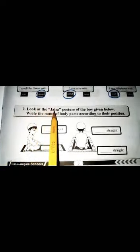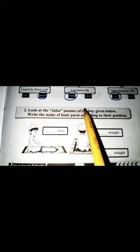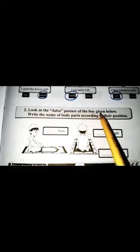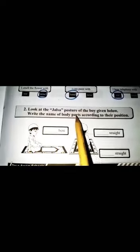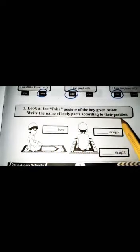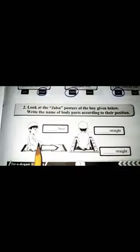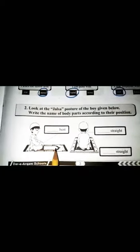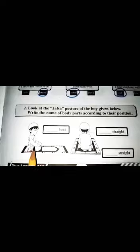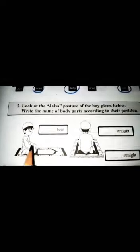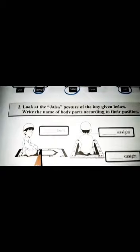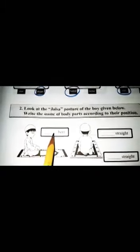Now come to question two. Look at the jalsa posture of the boy given below. Write the name of body parts according to their position. He is a boy and he is offering prayer. Which body part is bent? Yes, he bent his knee. Write knee here.